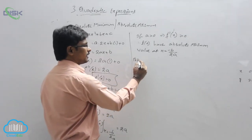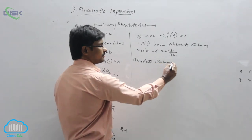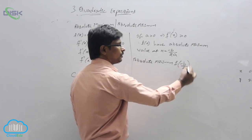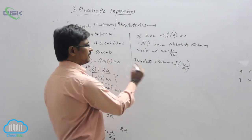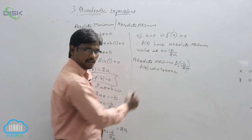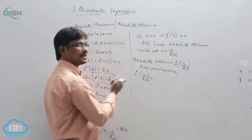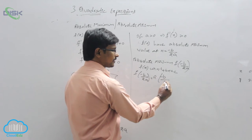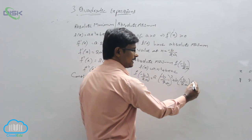Now we have to find out the absolute minimum value. How to find it? This absolute minimum value will be f of minus b by 2a. So what is f of x? It is ax squared plus bx plus c. What will be f of minus b by 2a? In place of x, we write minus b by 2a and substitute: a times minus b by 2a whole squared, plus b times minus b by 2a, plus c.